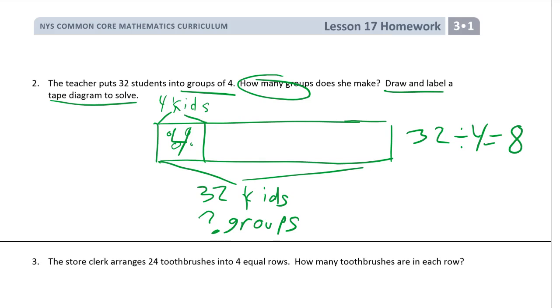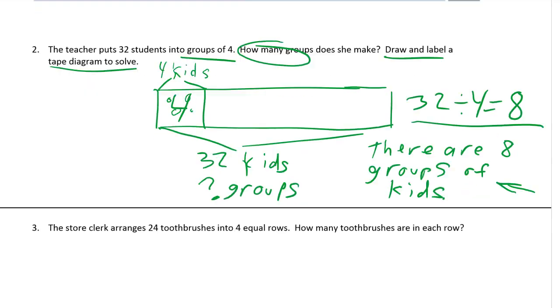And we still need our answer. There are eight groups of kids. All right. And you don't have to fill out the whole tape diagram. But you do have to have this much of it. And you have to have this equation. And you have to have a statement for your answer. You have to have those things.